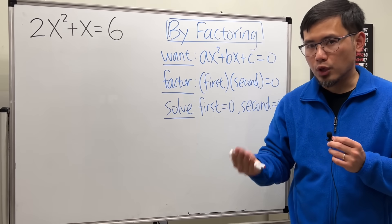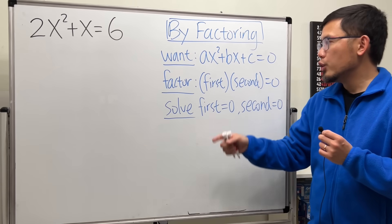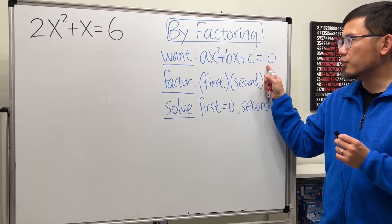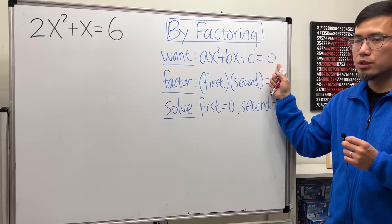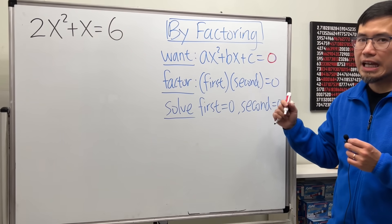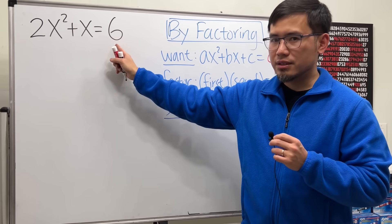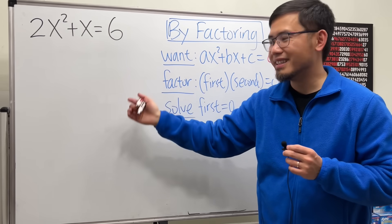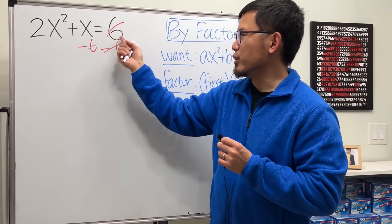The first way is the way that you always try first, and that's by factoring. To do so, you want to have an equation in the standard form, and that's ax squared plus bx plus c equals 0. The key is you want to have 0 on one side. Let's make that happen first, because this right here is not equal to 0, it's equal to 6. It's okay. Let's just minus 6 on both sides. Bring that to the other side.